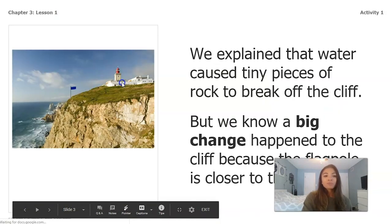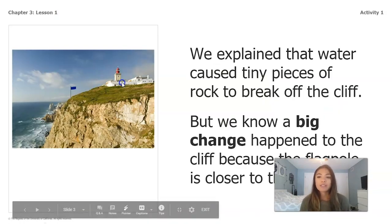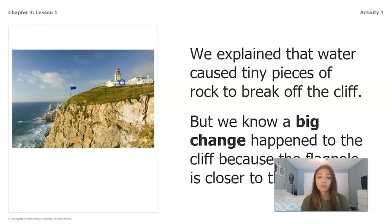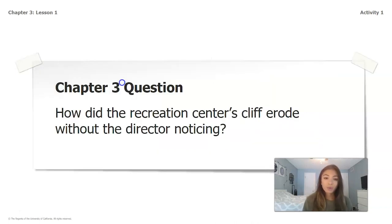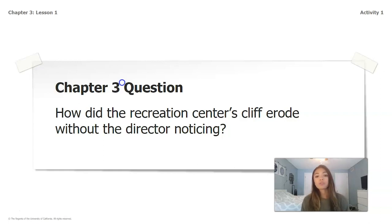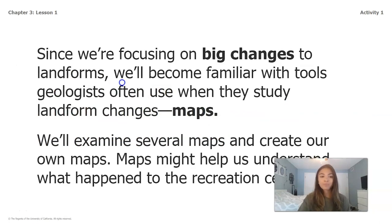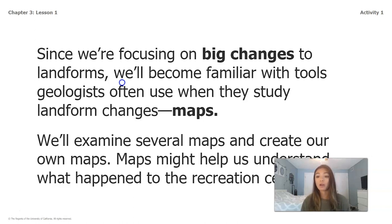We explained that water caused tiny pieces of rock to break off of the cliff, but we know a big change happened to the cliff because the flagpole is now closer to the edge. Our chapter three question is: how did the recreation center's cliff erode without the director noticing? Erode means tiny pieces of rock breaking off — it's a smaller change. Since we're focusing on big changes to landforms, we'll become familiar with tools geologists often use when they study landform changes, and that tool is a map.